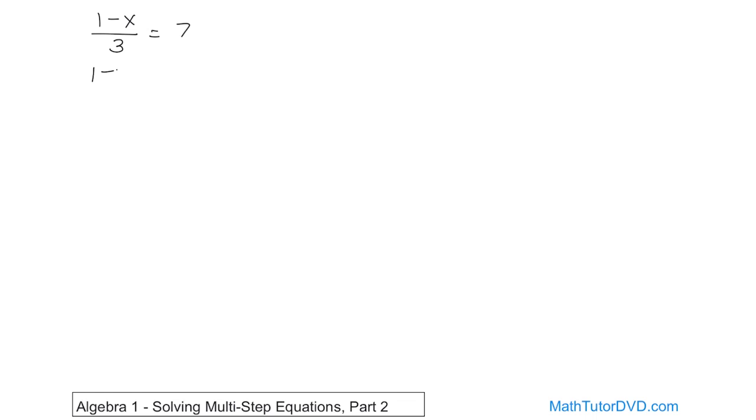So 1 minus x over 3 is equal to 7, and since we're dividing by 3, we'll just multiply by 3 and multiply by 3. I'm trying to tell you by examples that the 3 is going to cancel with the 3, so all you're going to have on the left-hand side is 1 minus x, and on the right-hand side, you're going to have 21.